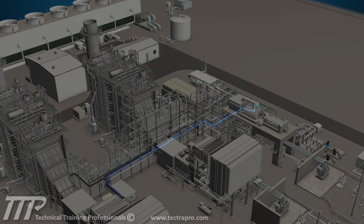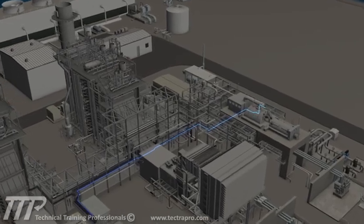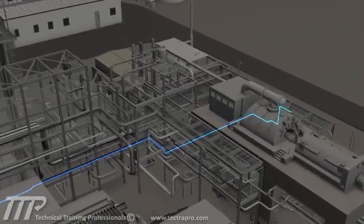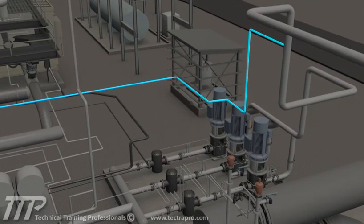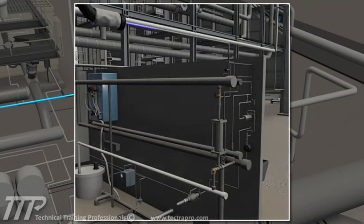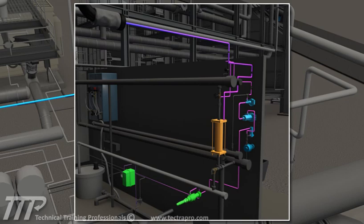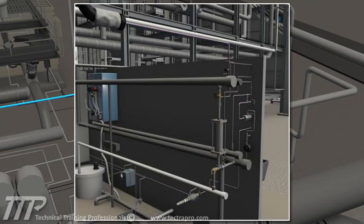Sample point 1 is the condensate pump's discharge. At the sample panel, the condensate is cooled and its pressure and flow are adjusted before flowing to the pH and specific conductivity analyzers. Provisions for manual sampling are available to further analyze the conditions of the water, for example, oxygen and iron content.